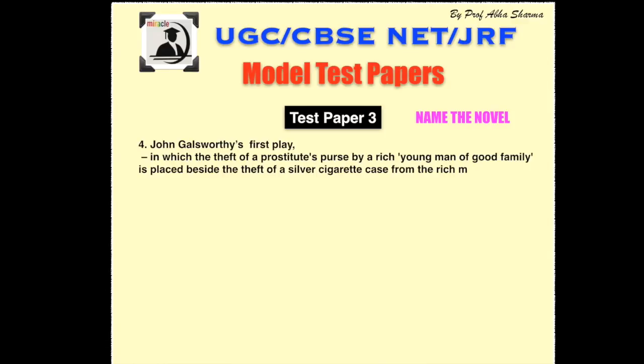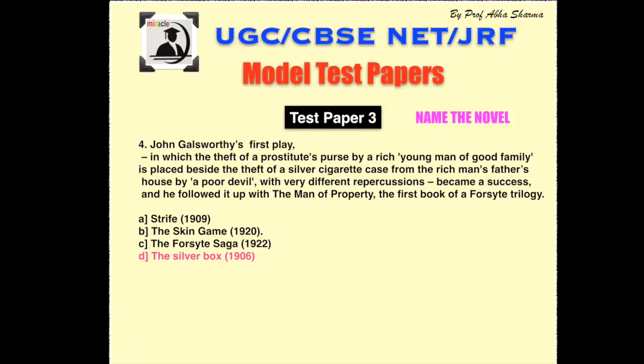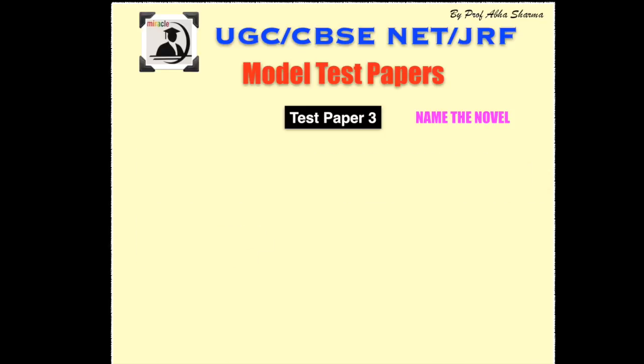Question number 4: the correct answer is The Silver Box. Galsworthy was a successful dramatist. His plays were written in a naturalistic style, usually examining some controversial ethical or social problem. The Silver Box was published in 1906 and, like many of his other works, has a legal theme and depicts a bitter contrast of the law's treatment of the rich and the poor.